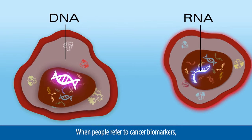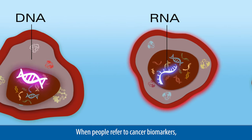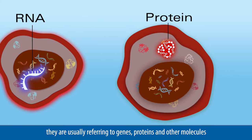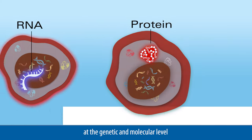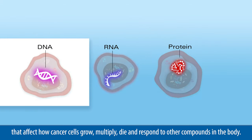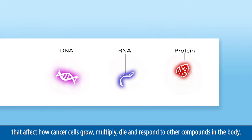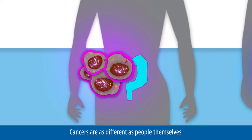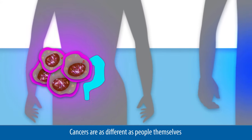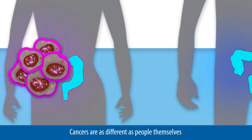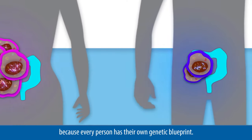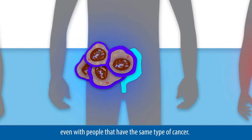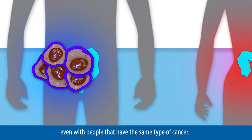When people refer to cancer biomarkers, they are usually referring to genes, proteins, and other molecules at the genetic and molecular level that affect how cancer cells grow, multiply, die, and respond to other compounds in the body. Cancers are as different as people themselves, because every person has their own genetic blueprint. No two cancers are exactly alike, even with people that have the same type of cancer.